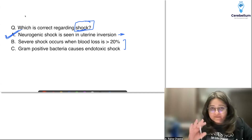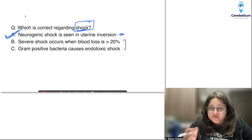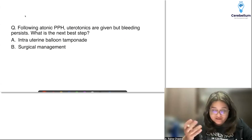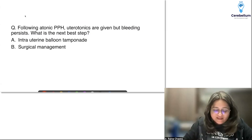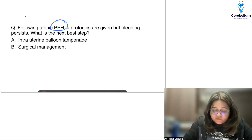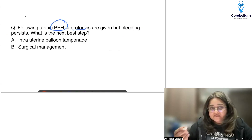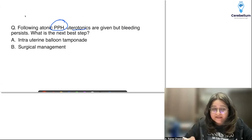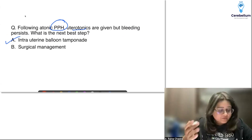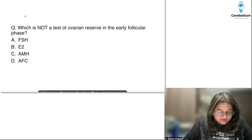There was another question on OC pills and risk of DVT — one option was from obs and gynae. A question always comes on PPH. Uterotonics are given, but if bleeding persists, the next best step is mechanical management. Medical followed by mechanical followed by surgical — in fact, medical and mechanical go hand in hand. If that fails, we go to surgical management.